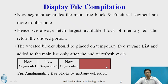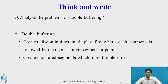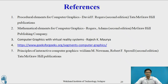This figure shows amalgamating free blocks by garbage collection. You can pause the video and answer the question: Analyze the problem with double buffering. Double buffering creates discontinuity in the display file where each segment is followed by the next consecutive segment or pointer, and it creates fragmented segments which are more troublesome.